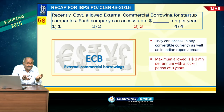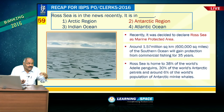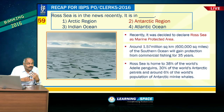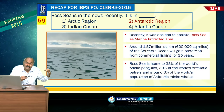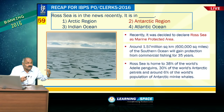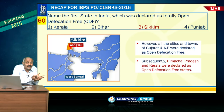Ross Sea, part of the Antarctic Ocean or Southern Ocean, was declared the world's largest marine protected area. Commercial fishing is banned there for 35 years. Regarding open defecation-free states: Sikkim was first, followed by Himachal Pradesh and Kerala. All cities and towns of Gujarat and Andhra Pradesh were also declared open defecation-free.